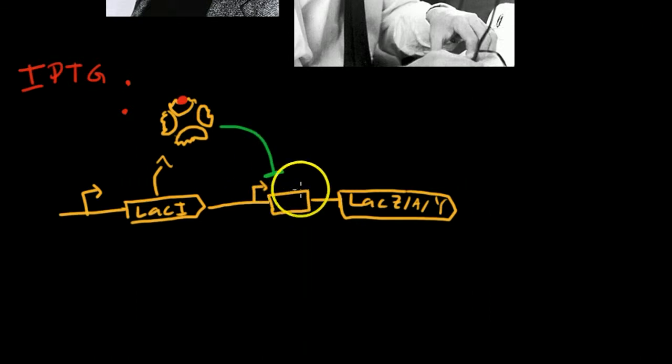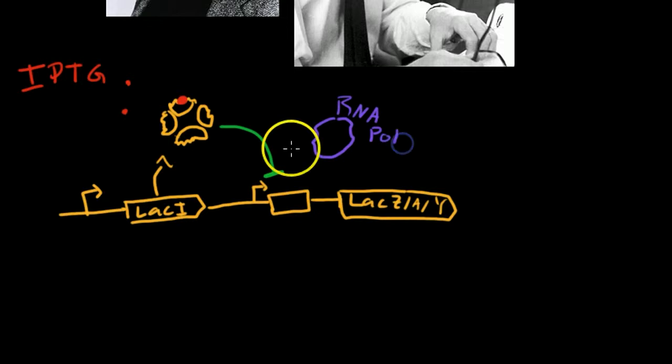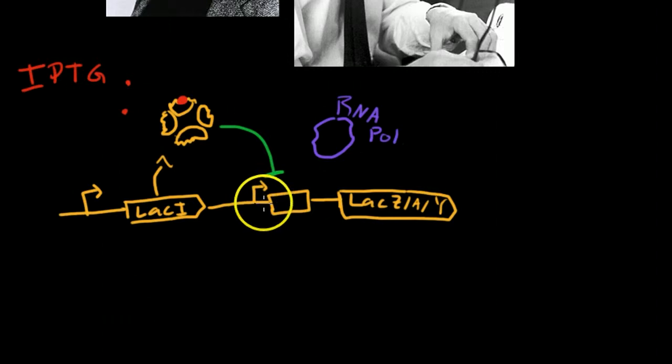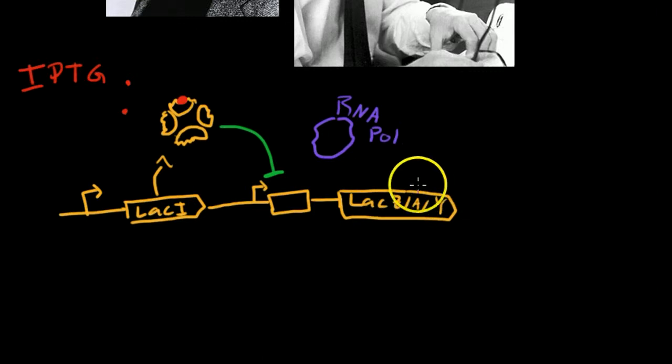So it cannot inhibit. When it can't inhibit, it means that RNA polymerase, just draw that as a big glob. This is RNA polymerase. If this is no longer present here, then RNA polymerase is able to bind on to the promoter sequence, and then transcribe and induce transcription and translation of this protein product.